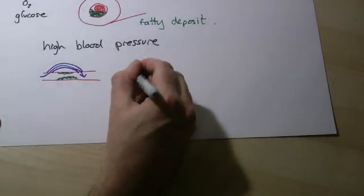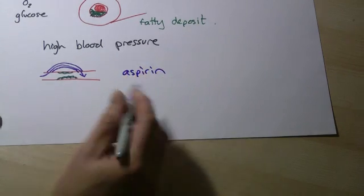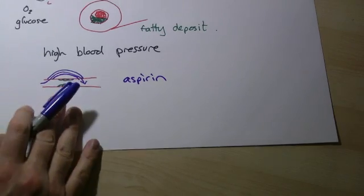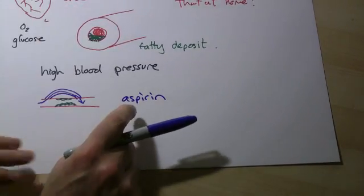Things like aspirin can thin your blood out, make it easier for it to pass through. So that's one of the things you might know, older relatives and things, who take aspirin every day.